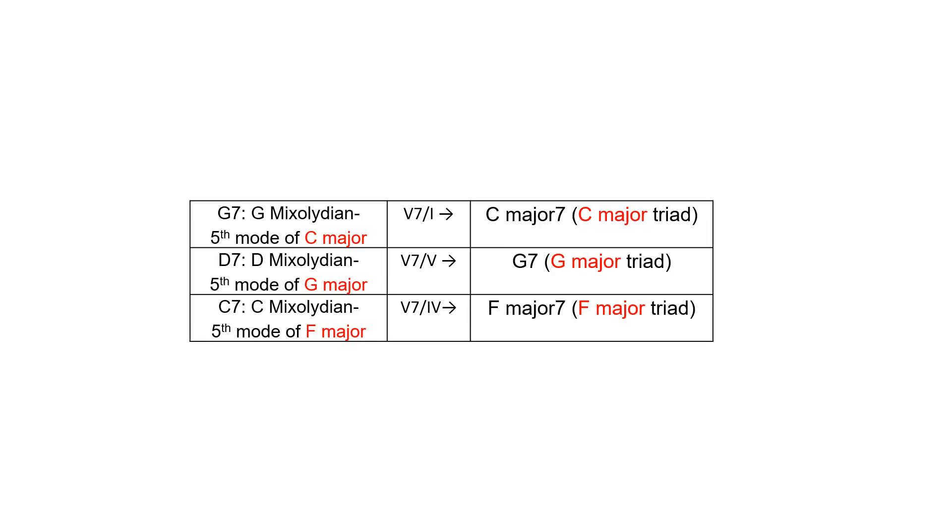When the target chord contains a major triad, such as C major, G major, or F major, the dominance, whether primary or secondary, use mixolydian, the fifth mode of the major scale.